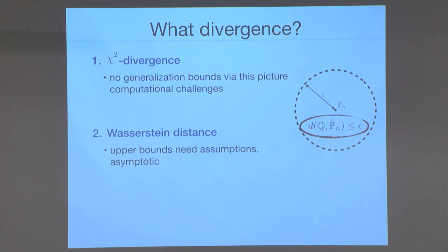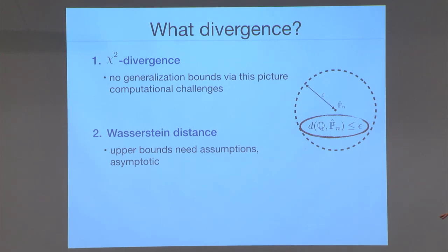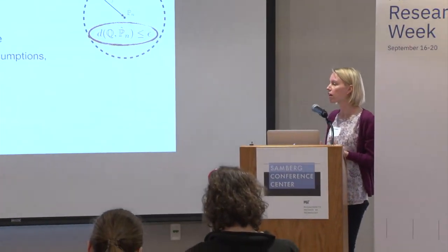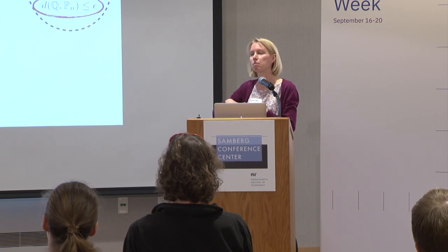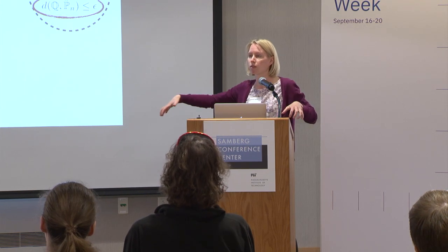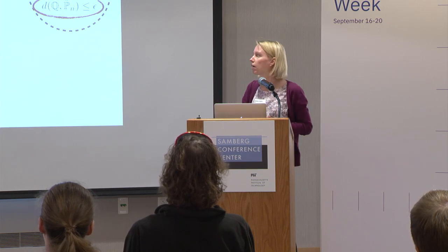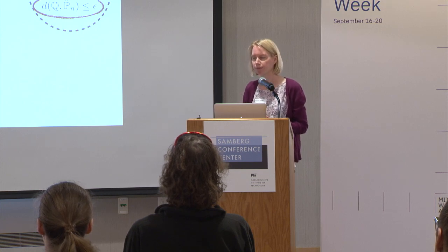The second option is the Wasserstein distance, which measures divergence very differently. The easiest way to understand it: think of each distribution as a pile of sand. The Wasserstein distance measures how much work it takes to transform one pile into the other. If they're the same, the cost is zero; if far apart, it takes a lot of effort. It takes into account how far you must transport the mass and how well aligned the shapes are — that's why Wasserstein has been popular in machine learning.